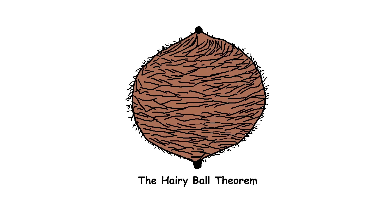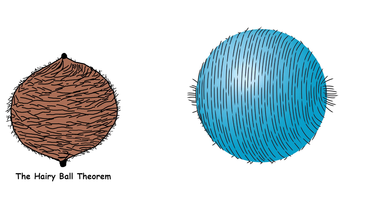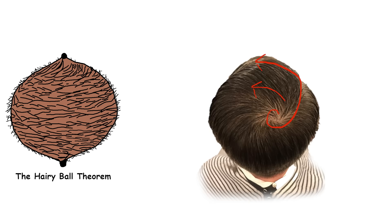The hairy ball theorem: a ball covered in hair, like a fuzzy tennis ball. The theorem says you can't smoothly comb down all the hair on this ball without creating a tuft, like a cow lick on your head, somewhere.